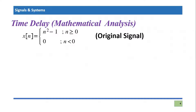Let's consider an original signal x(n), where we are not considering the sampling period T — we only want to observe the effect of shifting on samples. The signal is defined as x(n) = n²-1 for n greater than or equal to zero, and x(n) = 0 for n less than zero. This is a two-piece function: it has a specific definition for non-negative n and is zero for negative samples.